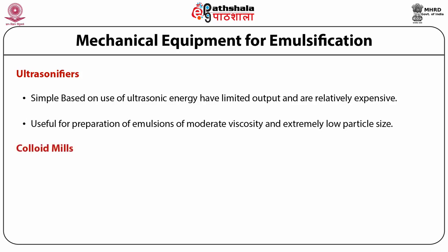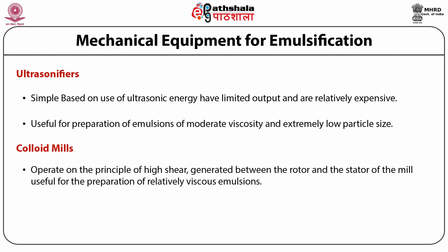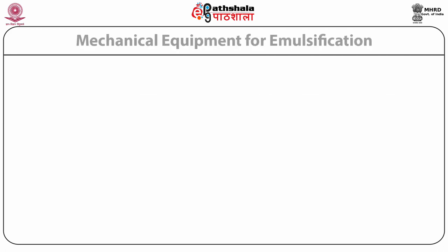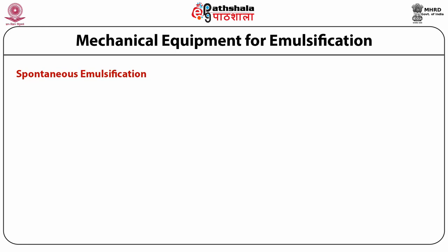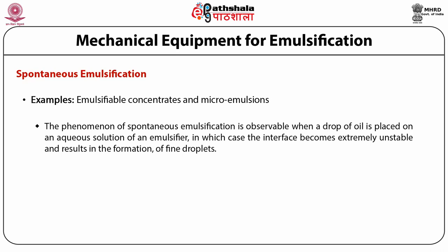Colloid mills operate on the principle of high shear generated between the rotor and stator, and are useful for the preparation of relatively viscous emulsions. An emulsion generated without the application of any external agitation is known as spontaneous emulsification; examples include emulsifiable concentrates and microemulsions. The phenomenon is observable when a drop of oil is placed on a solution of an emulsifier, causing the interface to become extremely unstable and resulting in the formation of fine droplets. Spontaneous emulsification is not practiced commercially.